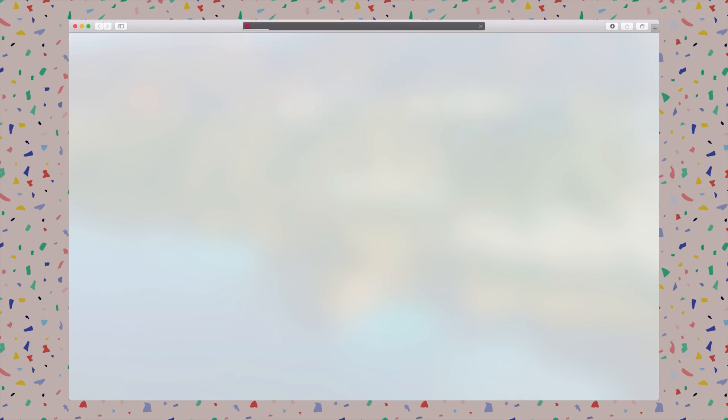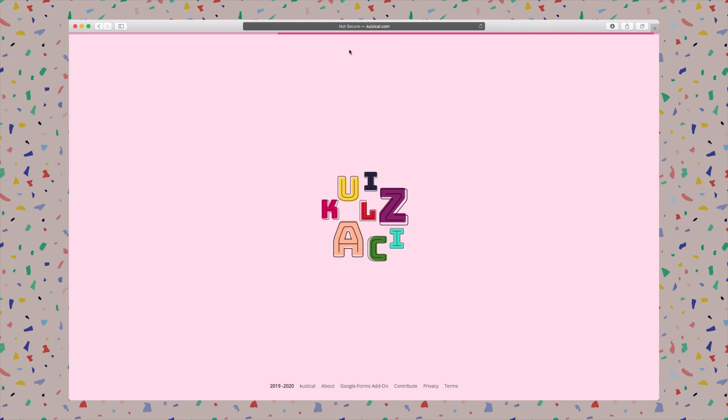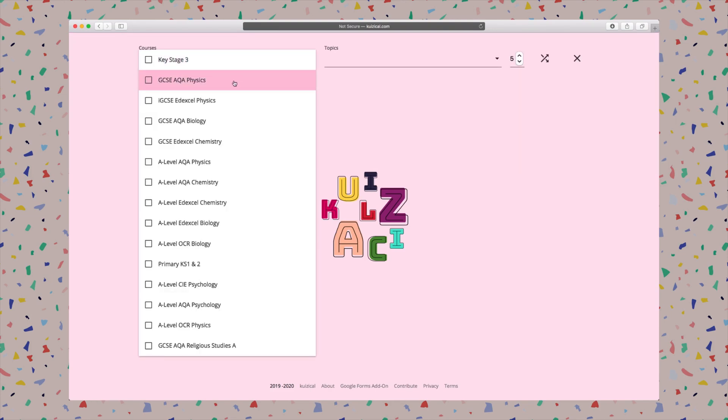So first of all, let's go to quizzical.com. There we go. And courses here, let's say I would like Physics AQA GCSE.